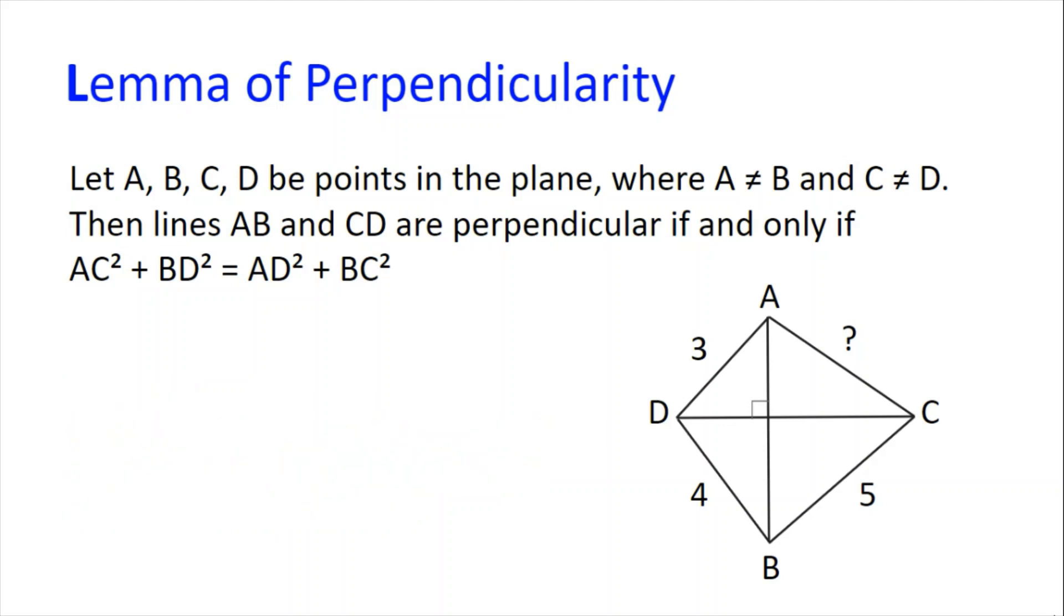Well, using the Lemma of Perpendicularity, we get AC squared plus BD squared is equal to AD squared plus BC squared. We then get AC squared plus 16 is equal to 9 plus 25 and AC squared is equal to 18, so AC must be the square root of 18.